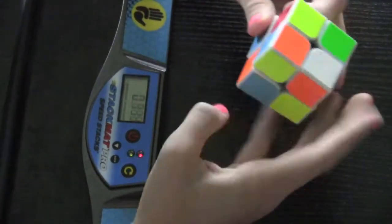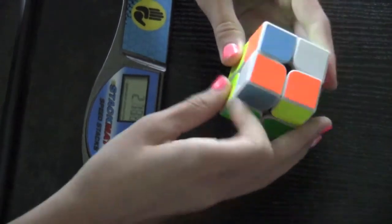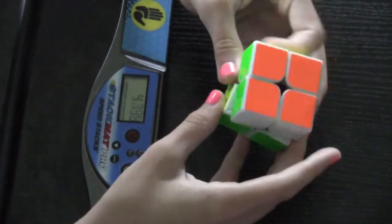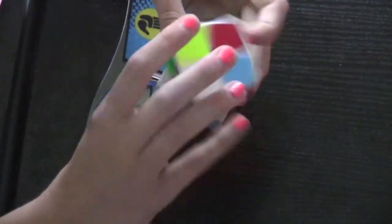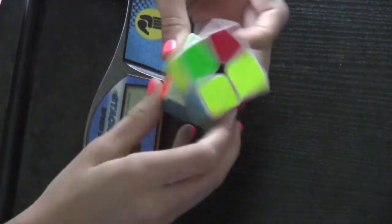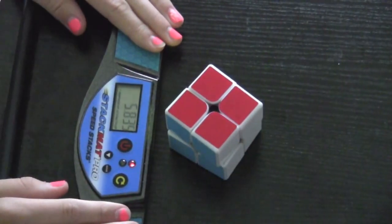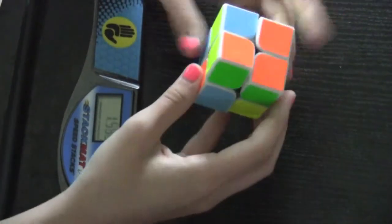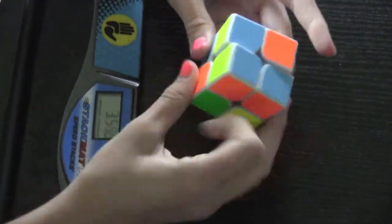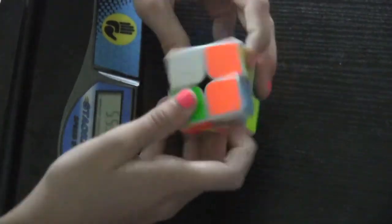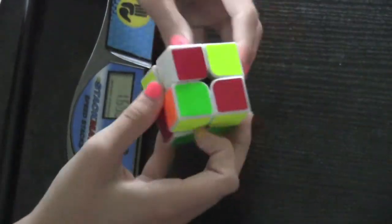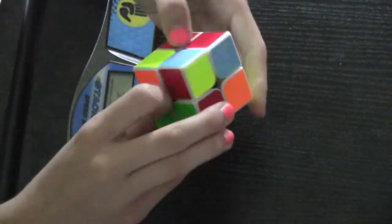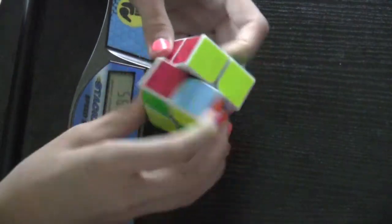Okay, so my overall feelings on this puzzle is that it is very good and I would highly recommend this puzzle to anybody who is looking at purchasing a 2x2. It is $16 on thecubicle.us, however right now they are having a sale for worlds so you can get this puzzle for probably around $14 or $15, which is only $3 more than a wit 2. So I hope you enjoyed this review and I will see you guys next time.